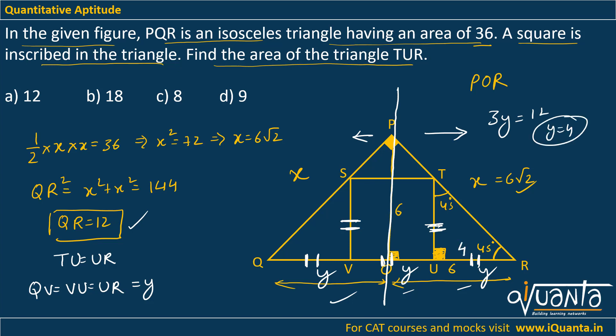With Y = 4, the base and height of triangle TUR are both 4. So the area of triangle TUR = half × 4 × 4 = 8. Option C is the correct answer.